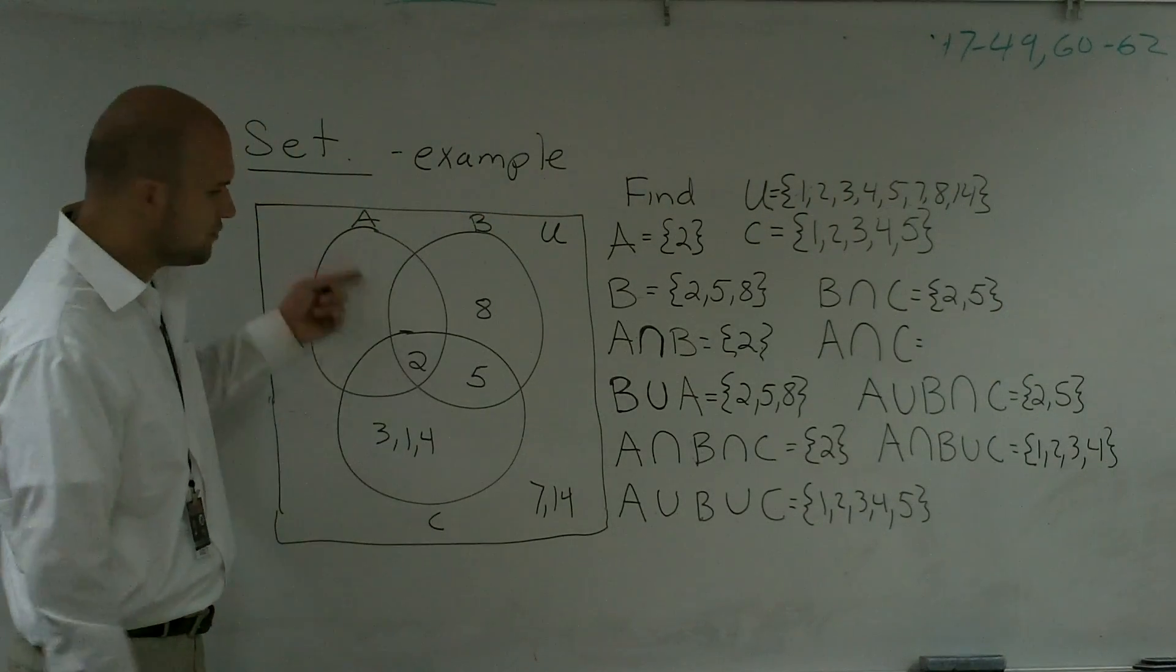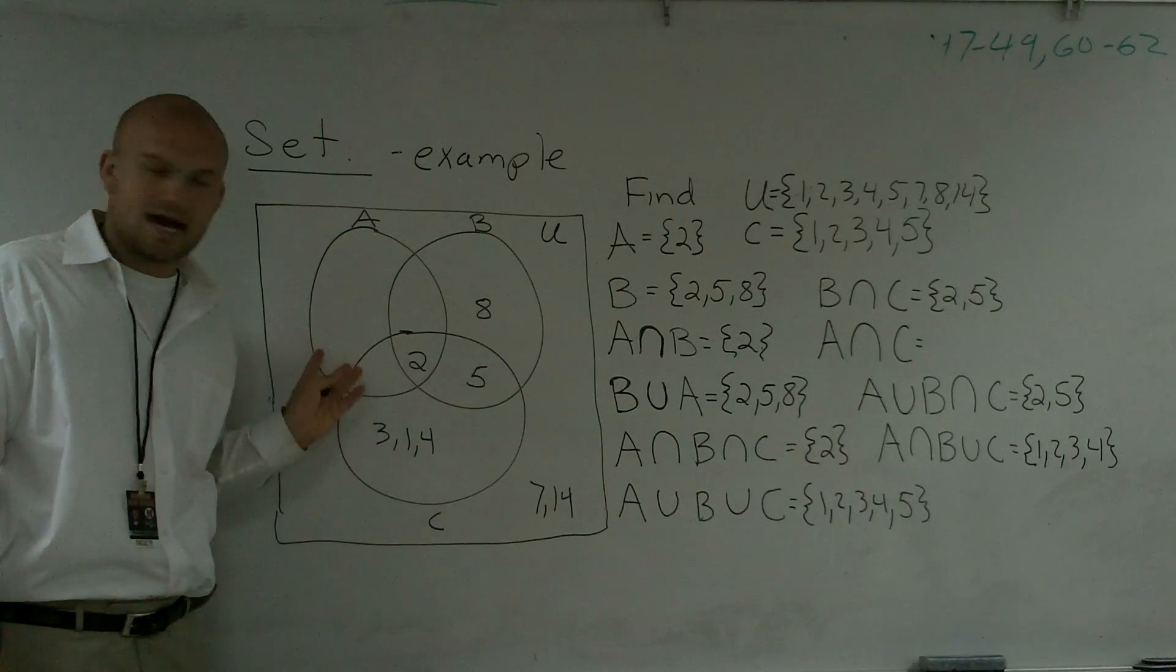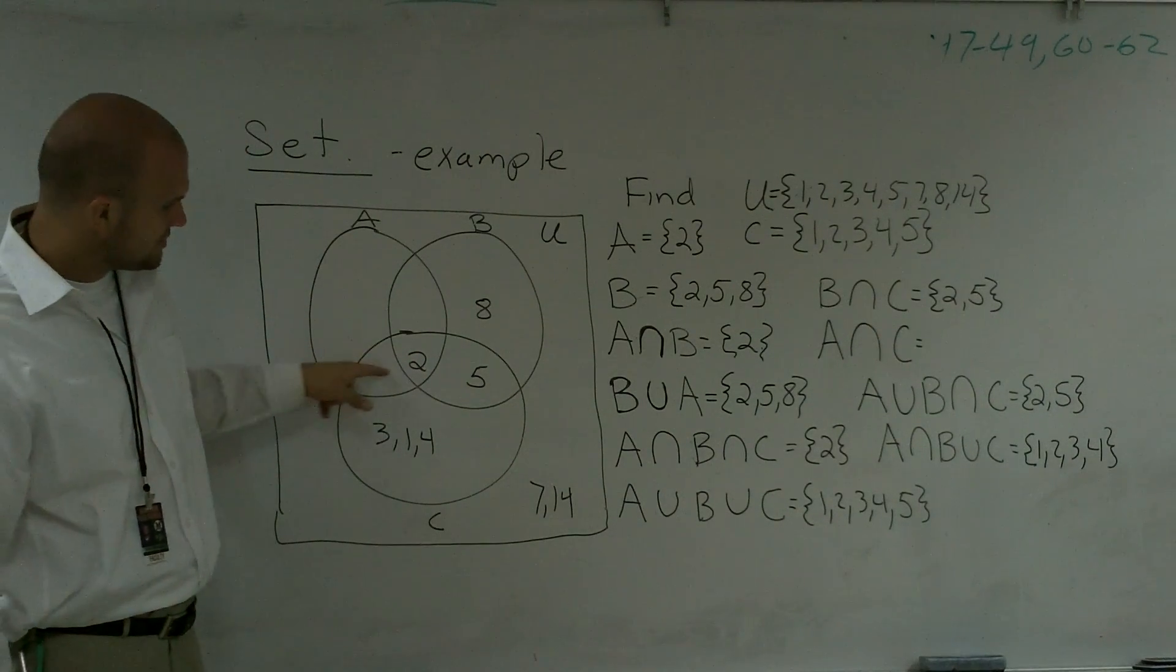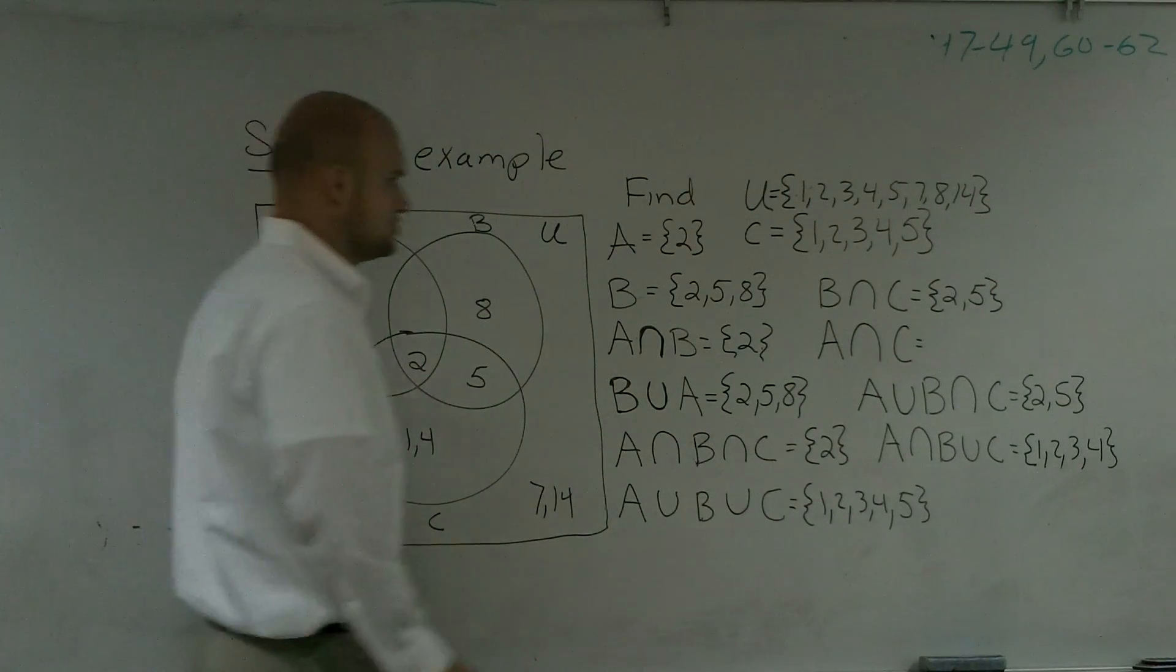And then A intersect C is what do these two have in common? And our only value that these two circles have in common is 2. Because there's nothing in this portion of the circle. So the only thing A and C in common is 2.